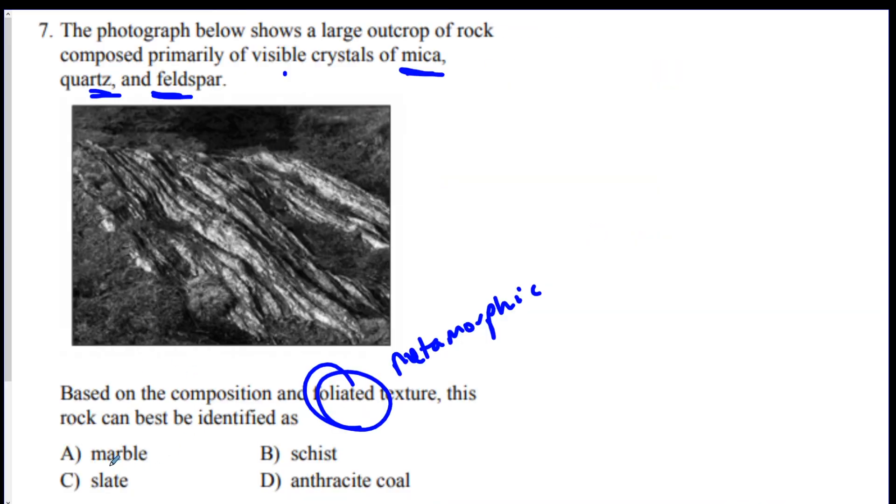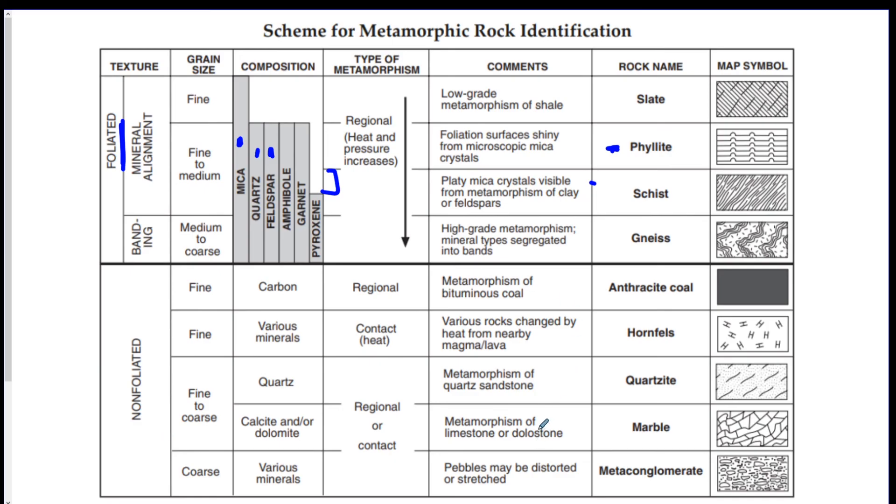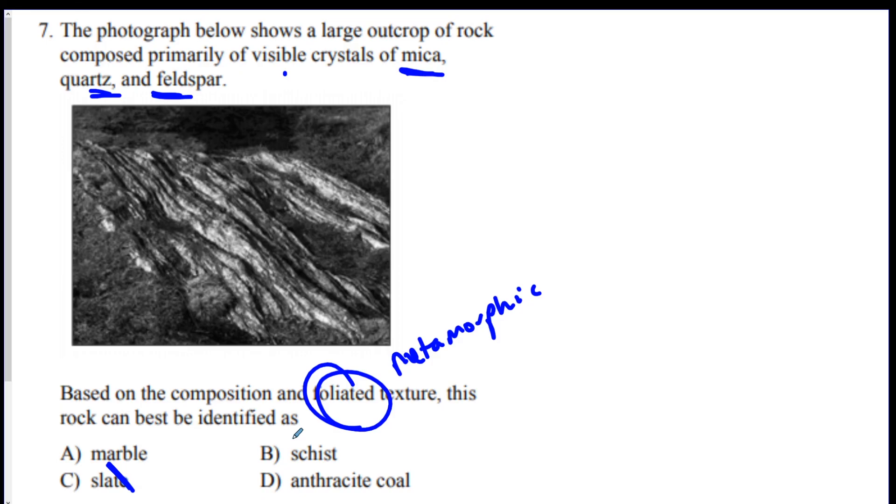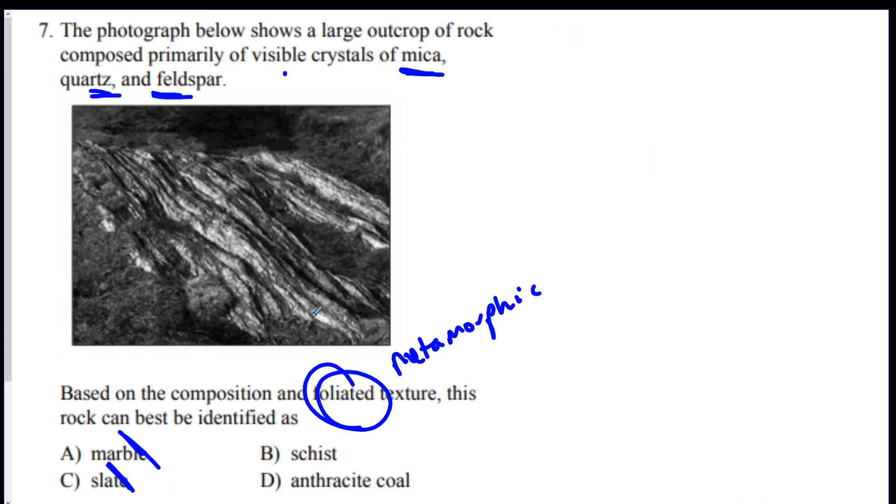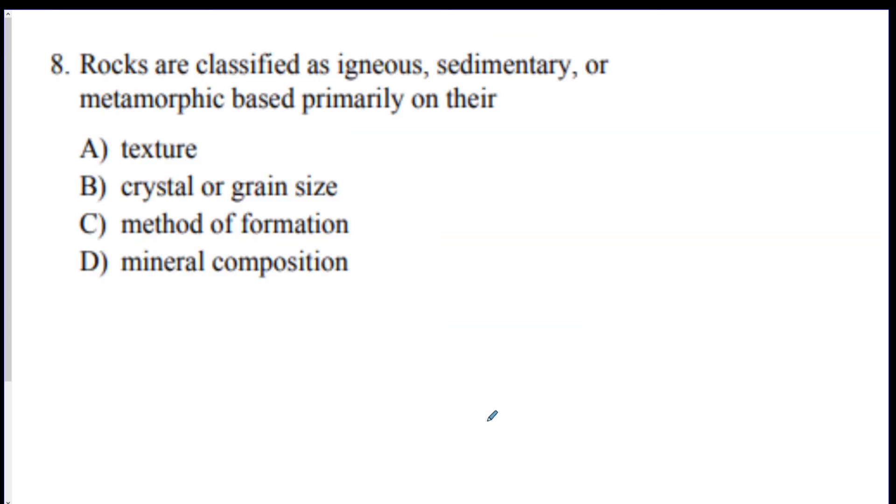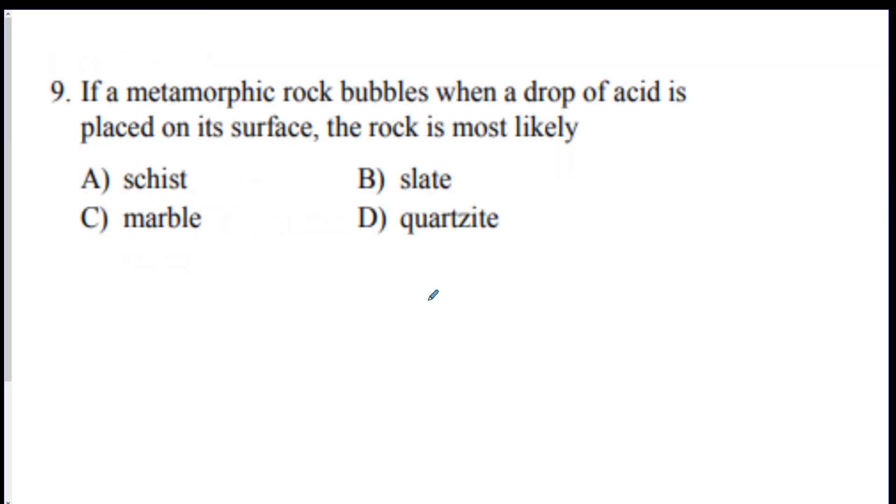Anthracite coal. That's made of carbon. That's out. It's schist. B. Number eight. Rocks are classified as igneous, sedimentary, and metamorphic based on what? Everything about rocks is based on how it forms. Igneous rocks are formed from lava. Sedimentary rocks are formed from sediments. Metamorphic rocks are formed from heat and pressure.